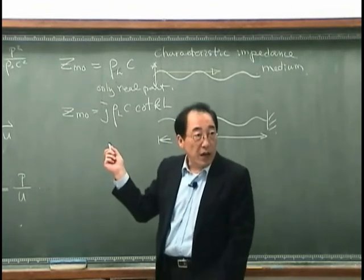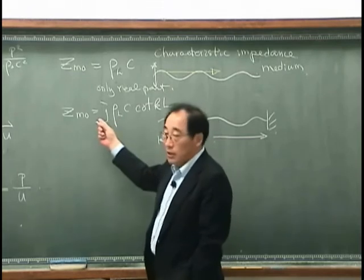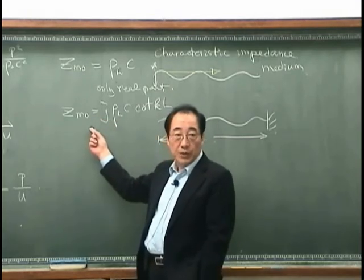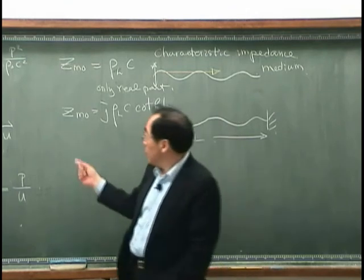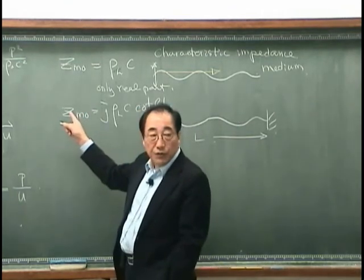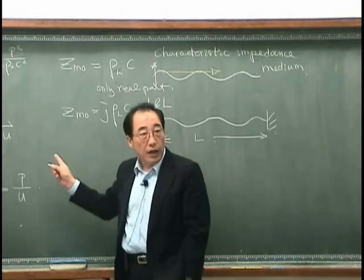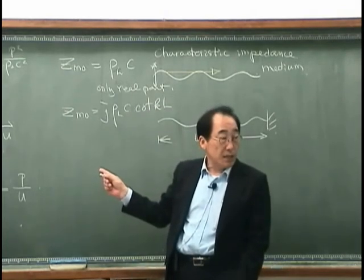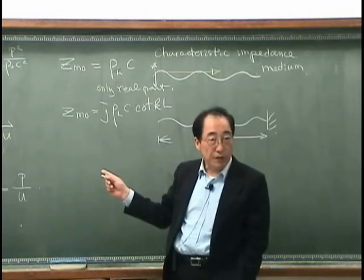On the other hand, when we have a finite string, the driving point impedance has only imaginary part. That means there is a phase difference between pressure and velocity.